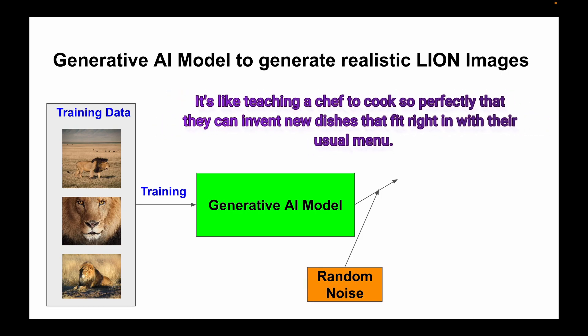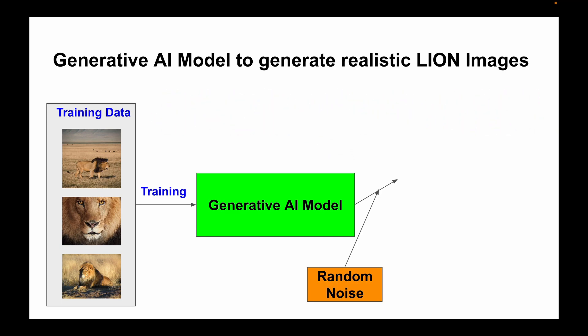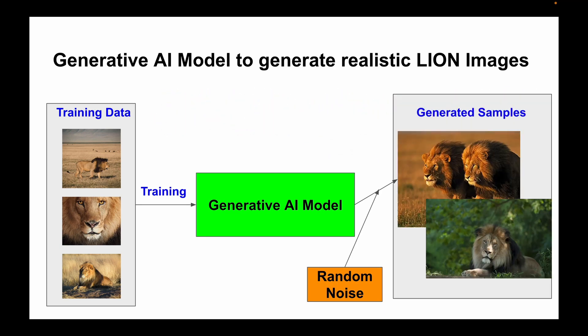It's like teaching a chef to cook so perfectly that they can invent new dishes that fit right within their usual menu. So in the end, it's all about getting the computer to understand and imitate what you have shown to it, and then letting it use a bit of randomness to come up with fresh, unique creations that fit the same style.